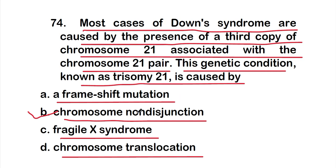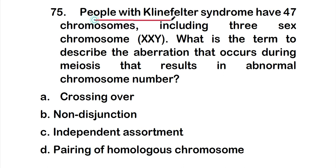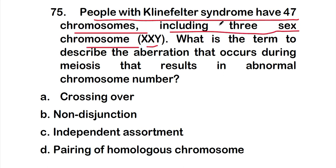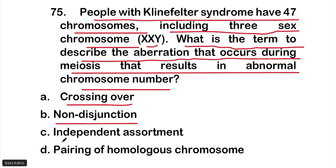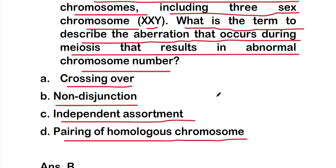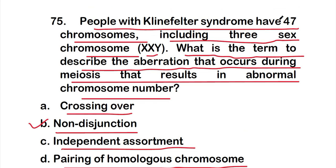Question 75: people with Klinefelter syndrome have 47 chromosomes, including three sex chromosomes (XXY). What is the term to describe the aberration during meiosis resulting in this abnormal chromosome number? Options: crossing over, non-disjunction, independent assortment, pairing of homologous chromosomes. The right answer is Option B — non-disjunction.